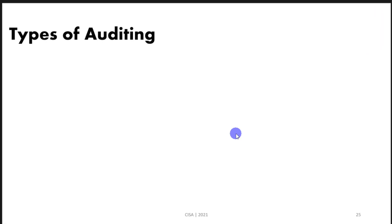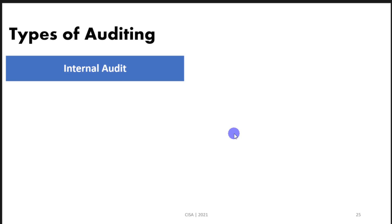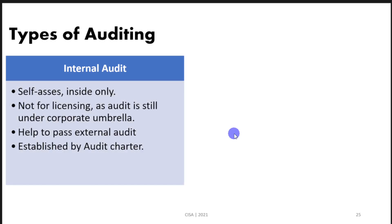We need first to understand that there are two main categories of auditing. The first category is the internal audit. An internal audit is a self-assessment; it is inside the organization and it cannot be used for licensing. In some cases we may need to be audited by an independent auditing firm to get a certificate or an auditing report that we can use to obtain a certain license. The internal audit is established by the audit charter and the main goal of the internal audit is to promote compliance and also help the organization to pass an external audit whenever it is performed.